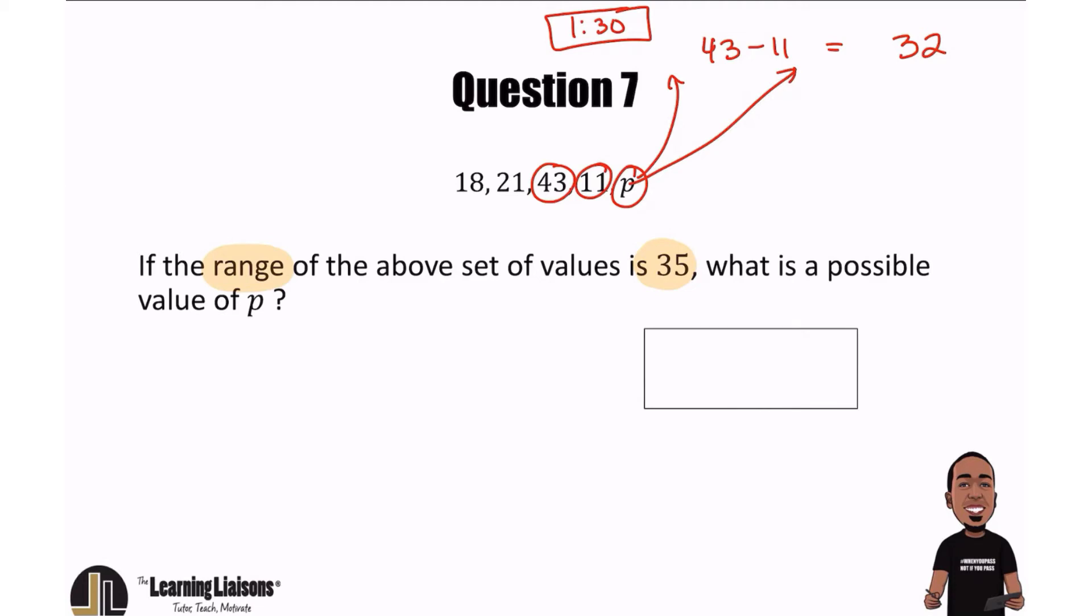It's either above 43 or below 11. And by how many numbers? Well, if we want the range to go from 32 to 35, that's a difference of three numbers.